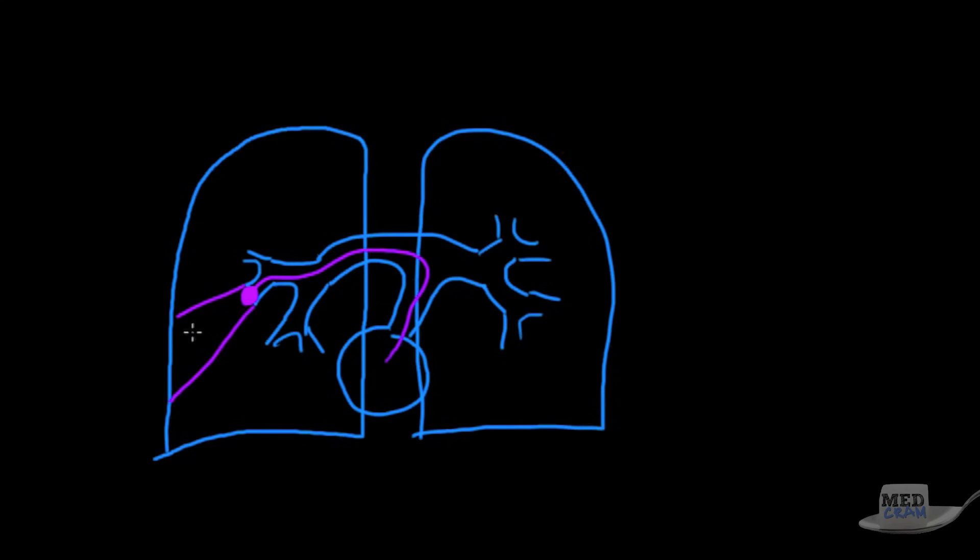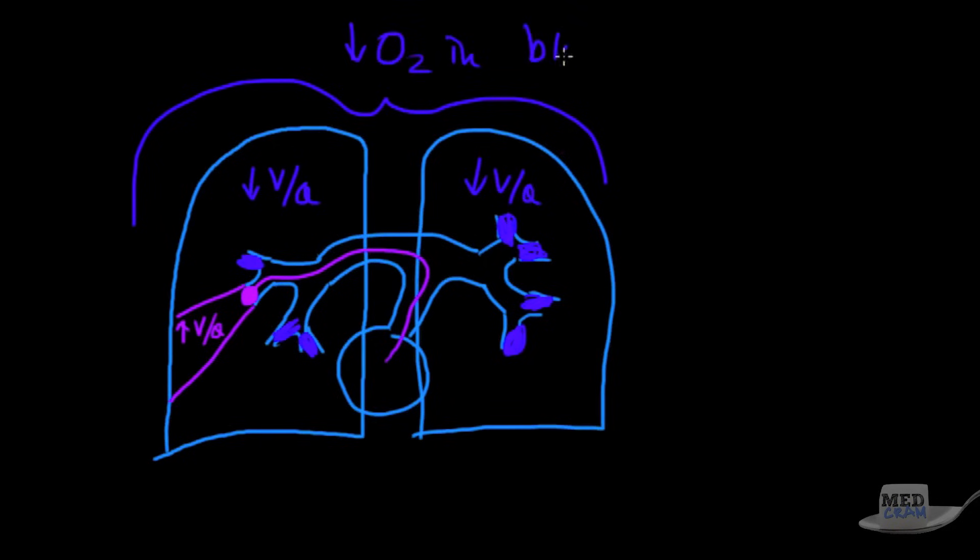So when you get a clot that forms, the clot gets pumped in and it goes over to a specific area and lodges. What happens at that point is that there is no more perfusion to this segment of the lung. As a result of that if there is no perfusion you're going to have an area of high VQ because there's very low perfusion. Now the blood that would normally go to this area, what happens to it? It's got to go everywhere else. So perfusion increases everywhere - you get an area of low VQ in comparison to this area here. As a result of this the whole situation is that you get low oxygen in the blood.